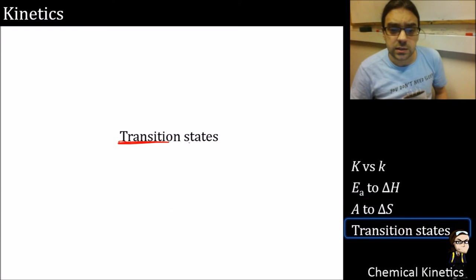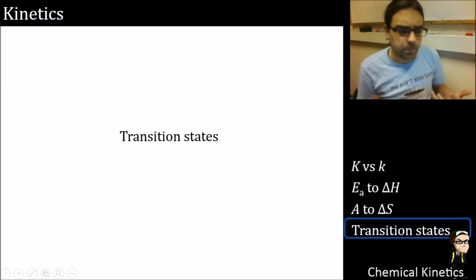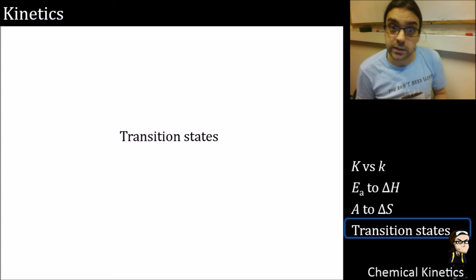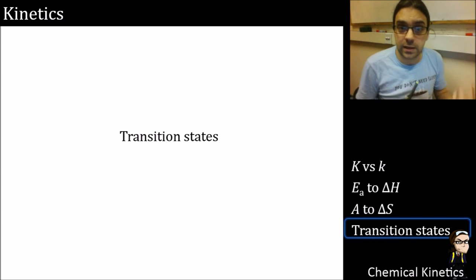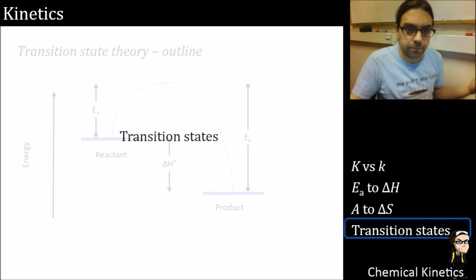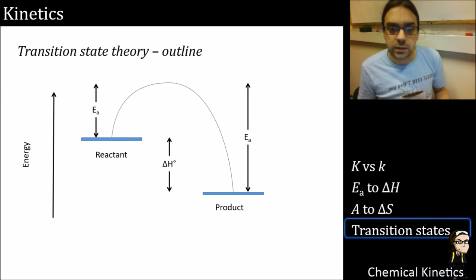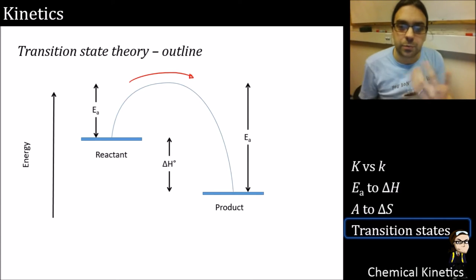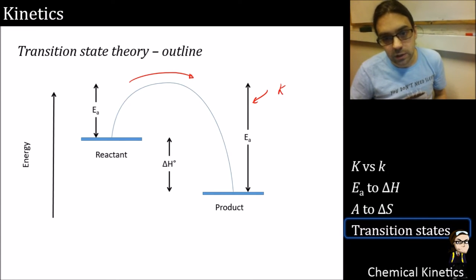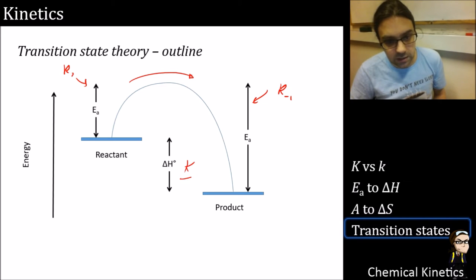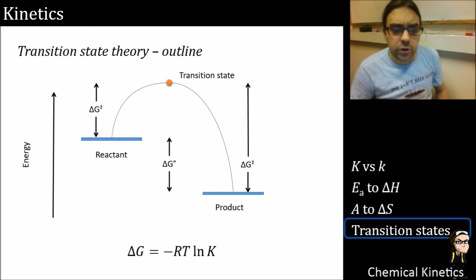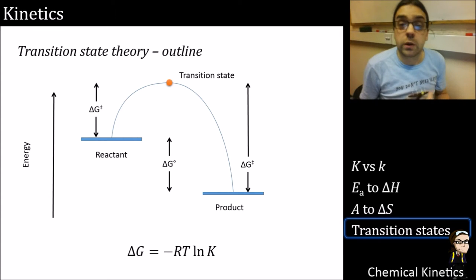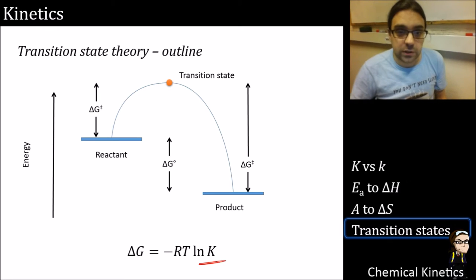Now transition state theory - I don't want to spend too long on it, it's groundwork for what you'll encounter later in physical chemistry. We have our activation energy and reaction profile: reactants to products separated by delta H, which controls the equilibrium. The small k tells us the forward reaction rate; the big K gives the equilibrium constant. We could swap these out for delta G to get the equilibrium constant.